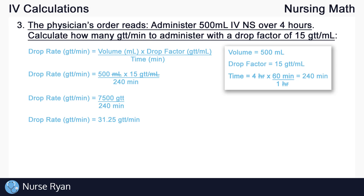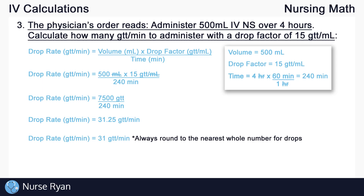Our final step is to round off our answer. For most nursing math, if the question does not specify, we tend to round to the nearest tenth for adult patients. However, when calculating drop rate in drops per minute, we always round to the nearest whole number — the nearest whole drop — because we can't realistically count 0.3 of a drop before it falls from our IV set. Since our answer is 31.25, we look at the 2, which is less than 5, so we round down to 31 drops per minute. For example, if we had 31.6 drops per minute, the 6 is greater than or equal to 5, so we would round up to 32 drops per minute.